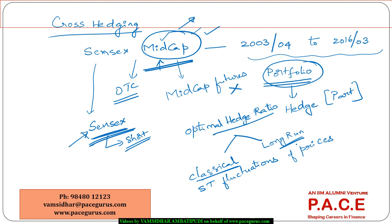So this is a two-step process as part of the hedging process. Initially we are looking at short-term price differences, then we are looking at the long-term stable relationship between both prices. Now let us try to look at that particular aspect using R.